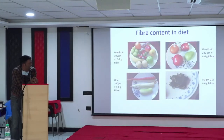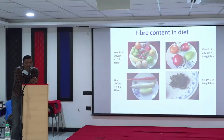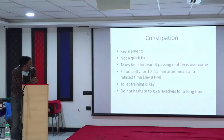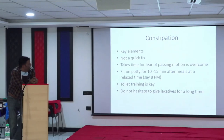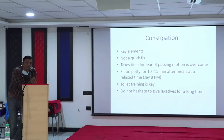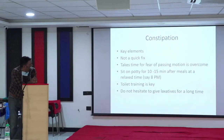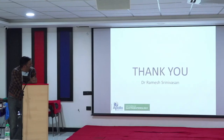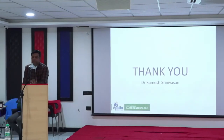Gram for gram, green leafy vegetables are the best fibre source. However, they're not very popular with children, so they need to be sneaked into the diet somehow. Constipation is not a quick fix - it can't be sorted in 15 days or one month. It takes time for the fear of passing motion to be overcome. Sit the child at a relaxed time when the morning school run is not there, iPads put away, TV off. Toilet training is the key. Do not hesitate to give laxatives for a long time - it's particularly important. Thank you so much.